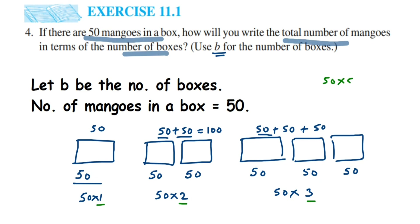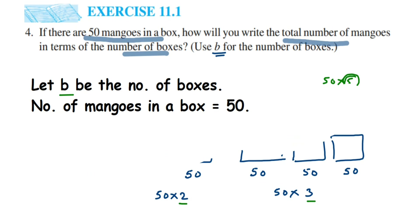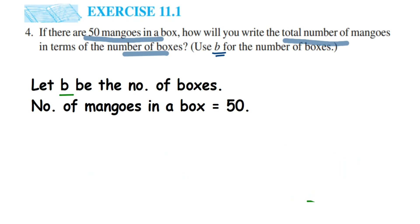So for 5 boxes it would be 50 × 5, for 10 boxes it would be 50 × 10. The number of boxes is changing each time — that's exactly why we use a variable b. A variable's value is not fixed; it keeps changing depending on what value you put there. So the simple formula is: 50 multiplied by the number of boxes, and the number of boxes is b.